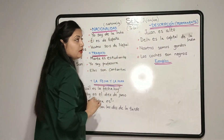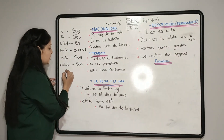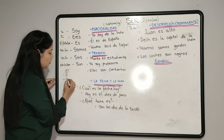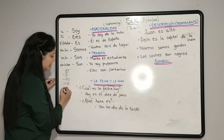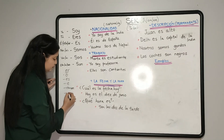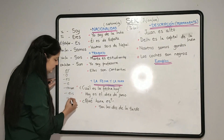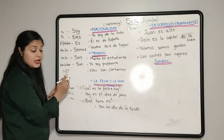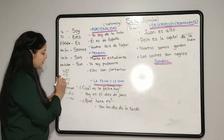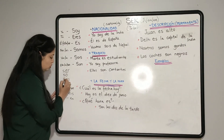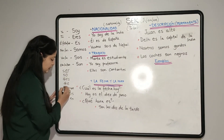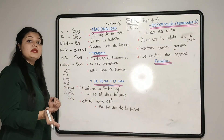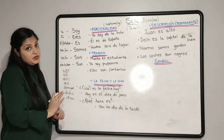Now, 'ser' ends in ER, and we know that the conjugation of a regular ER ending verb goes: -o, -es, -e, -emos, -éis, and -en. So if 'ser' had been a regular verb, as per the pattern, the conjugation should have been: so, ses, se, semos, séis, and sen. If 'ser' would have been a regular verb, the conjugation would have been this.